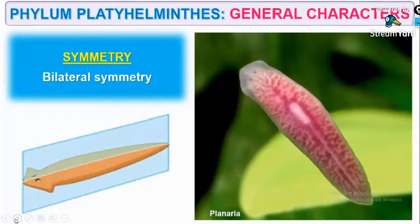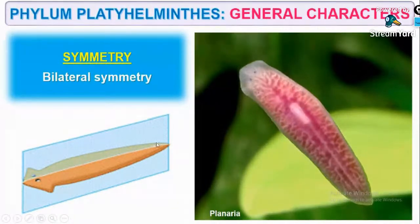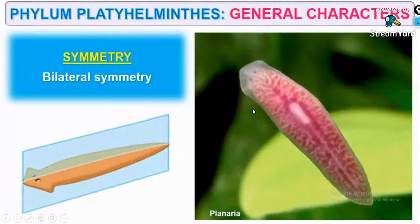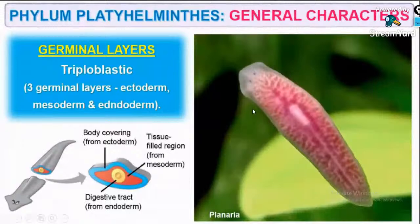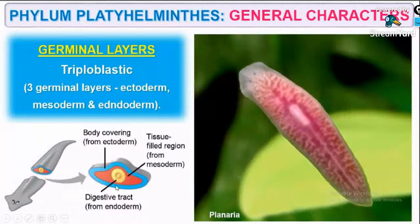They have bilateral symmetry — that is, it can be divided into two identical halves through only one plane, not on any plane. That is why it is said to be bilaterally symmetrical. It is triploblastic, meaning it has three germinal layers. You can see the ectoderm, mesoderm, and endoderm. Therefore we can say that it is triploblastic.